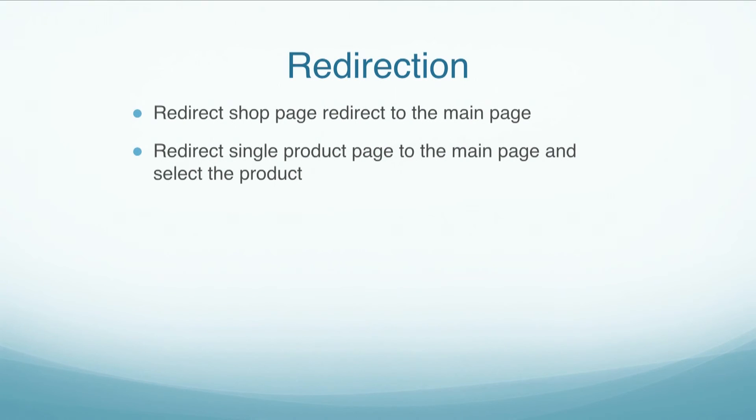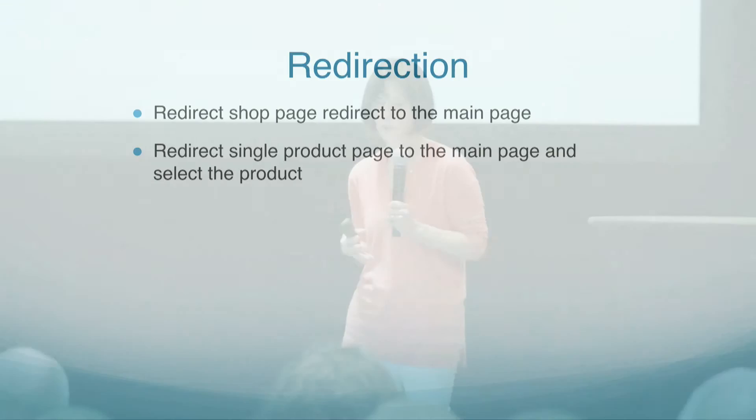Since everything is happening on this one page, we don't have a shop page and we don't have a single product page. I used the Redirection plugin to handle the redirects from the shop page to my home page, and the same for the single product page. The single product page has an additional aspect: you want to make sure they return to the correct product and see it selected. I just used a query parameter, then used some JavaScript to parse it out and handle the selection, and the AJAX call to get that working.